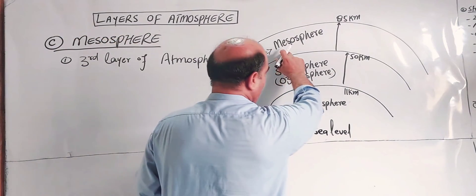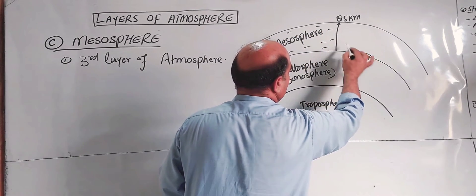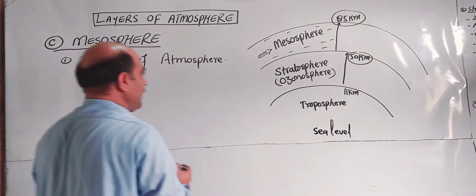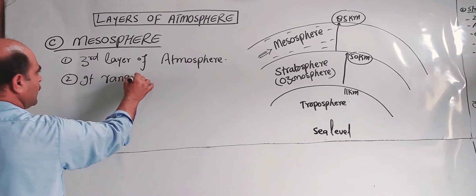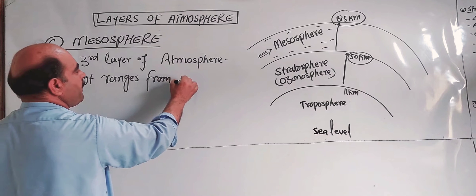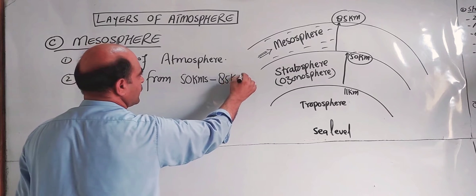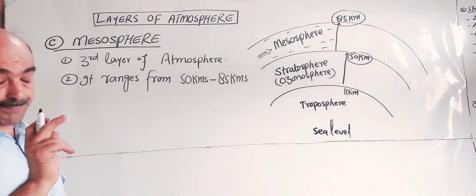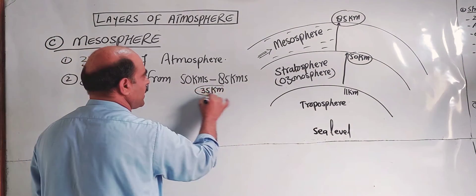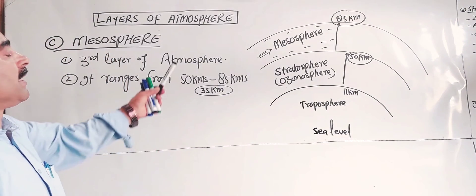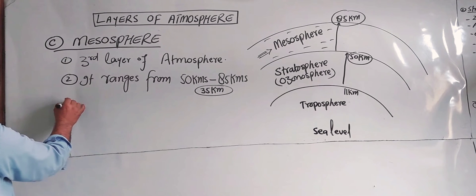The second characteristic is its range. The mesosphere ranges from 50 kilometers to 85 kilometers. The total thickness of the mesosphere is 35 kilometers.